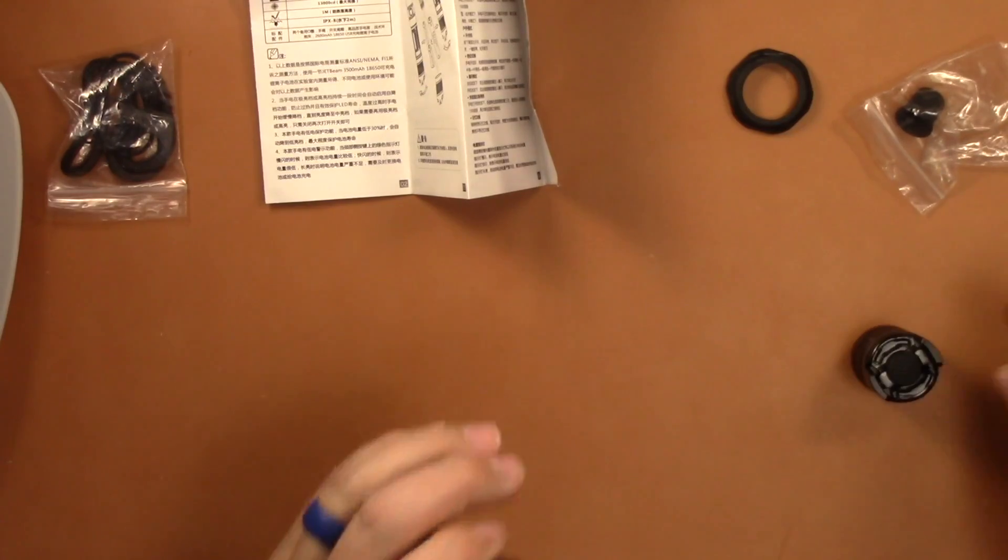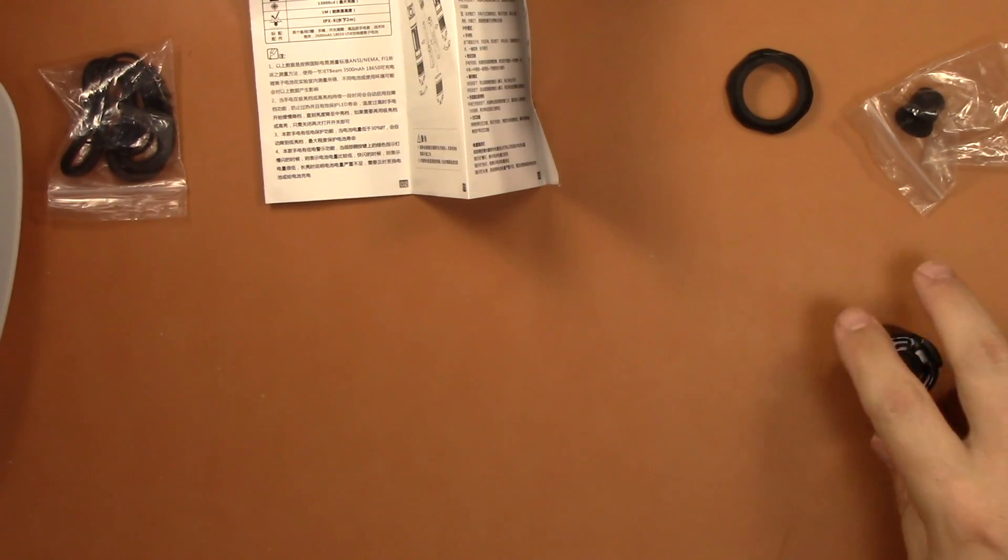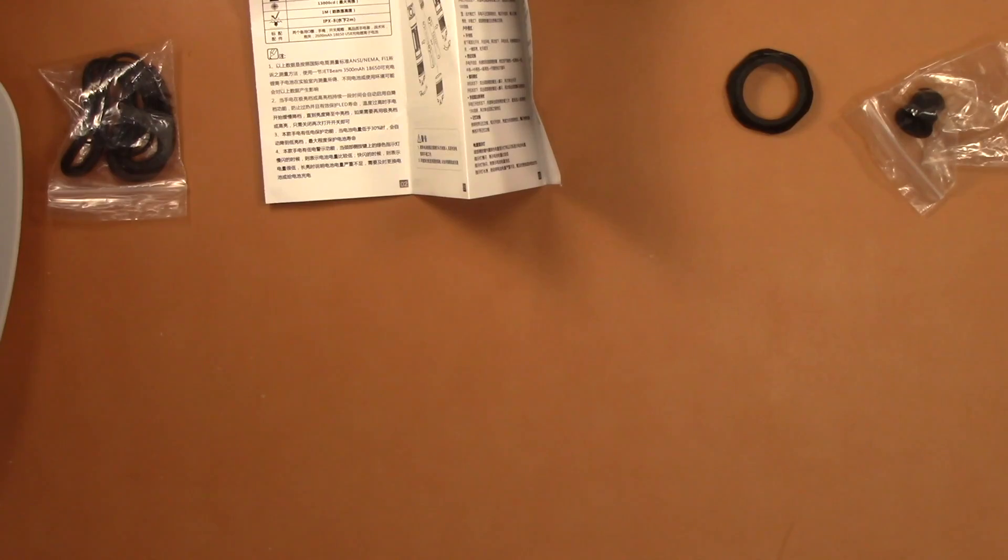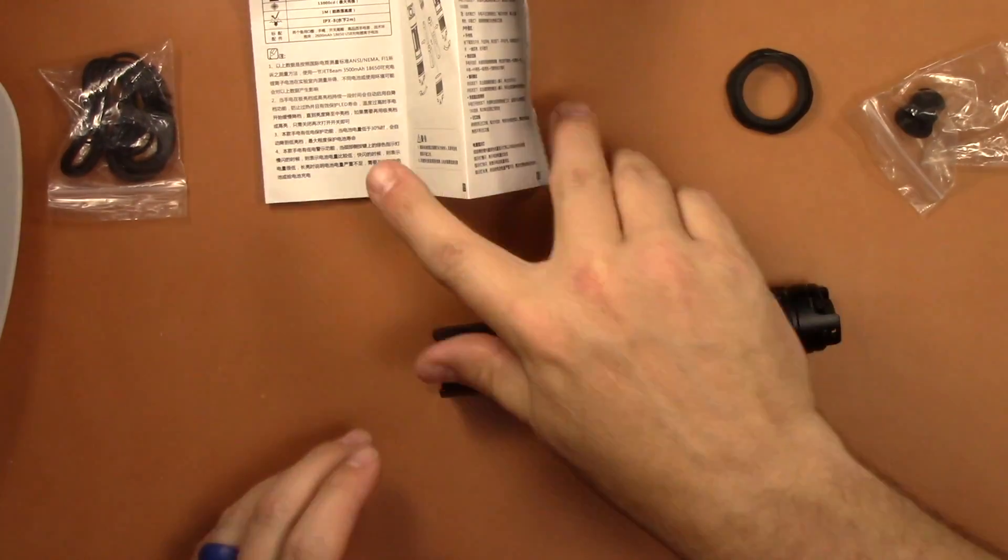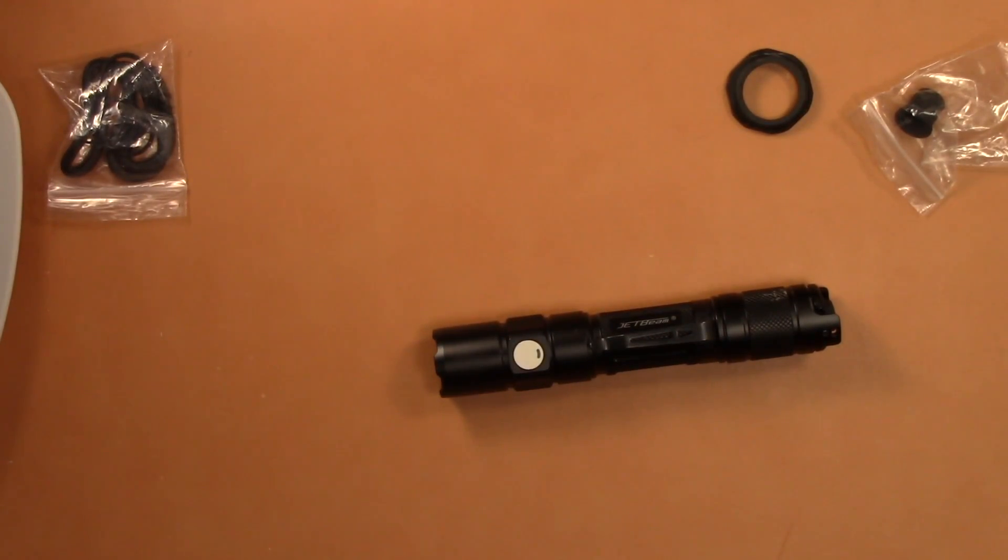So let's just go over the basic specs. We're going to go over in another different part of the video how the modes work, because this light is unique and has two different mode settings and three different switches, which is pretty cool. I just want to go over the basic specs now and your run times. This is your basic info that you can get from the JetBeam website or off the box here.